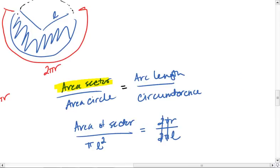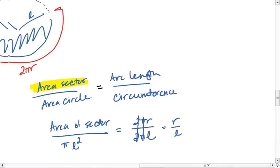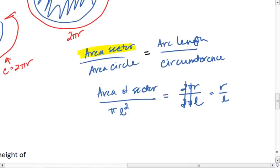The 2π's cancel, leaving me with just r over l. And now I can solve for the area of the sector, which will be r over l times πl². One of the l's cancel, leaving us with just πrl.